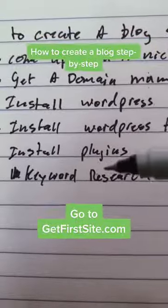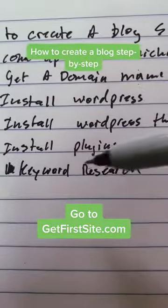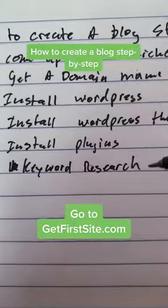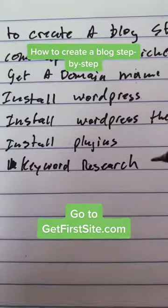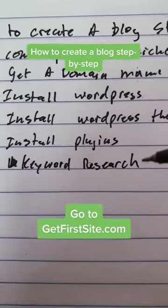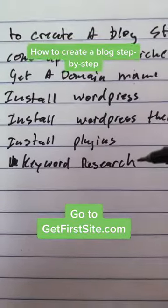Step six: keyword research. This is the act of figuring out what your target audience wants to know. You can use free tools or paid tools. I recommend Ahrefs if you're going to use a paid tool.